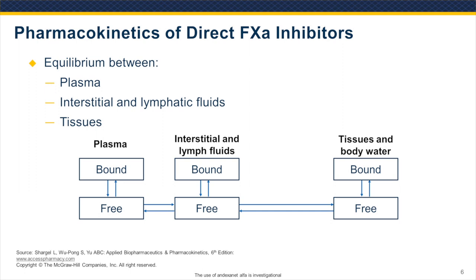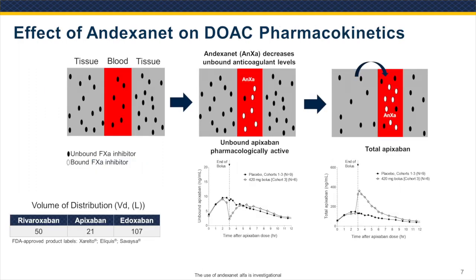Any alteration in that equilibrium will cause a redistribution, and andexanet alters that equilibrium. Prior to andexanet administration, you have an equal concentration of unbound levels across all compartments. Once andexanet is administered and it's restricted to the vascular compartment, the unbound levels go down — illustrated in the graph showing decreased unbound apixaban from the Phase II study. At the same time, because of the need to reestablish equilibrium, molecules from other compartments re-enter the vascular space, resulting in an increase in total apixaban levels. The maximum decrease seen for apixaban is about 2.5-fold, and for other molecules this increase is larger, directly related to the volume of distribution.